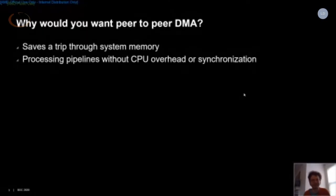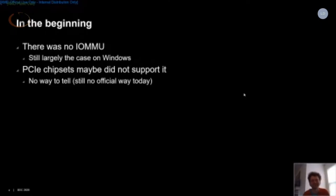You're probably thinking: this sounds great, what's the catch? The catch is that PCI never really formally defined peer-to-peer. In early chipsets, maybe it worked, maybe it didn't — that's improved a lot today, but there's still no standard official way to tell if a particular chipset supports it. In the kernel we have a whitelist of which platforms support it. On the AMD side, all Zen chips support it for both reads and writes; on AMD PCI chipsets prior to that, only writes were supported.